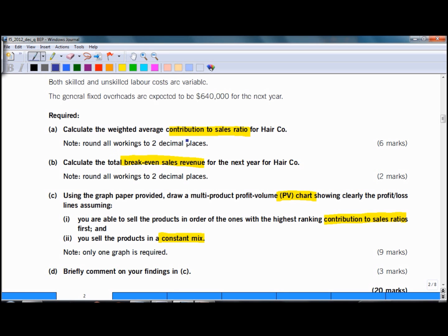What is the formula for contribution to sales ratio? Well it's contribution over sales, and we will calculate it in total not per unit. What is the formula for breakeven sales revenue? It is fixed costs over contribution to sales ratio which you calculated in part A.